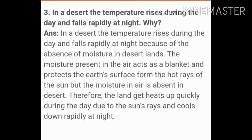The next question is: in a desert the temperature rises during the day and falls rapidly at night — why? The answer is: this happens because of the absence of moisture in desert lands. The moisture present in the air acts as a blanket and protects the earth's surface from the hot rays of the sun, but since moisture is absent in the desert, the land heats up quickly during the day and cools down rapidly at night.